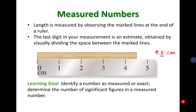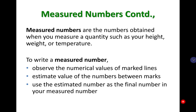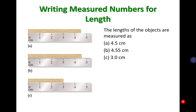Measured numbers are numbers obtained when you measure a quantity such as height, weight, or temperature using a scientific device. To write a measured number, you follow three steps: observe the numerical values of the marked lines, give an estimate for numbers between the marks, and that estimated number becomes the final measured number.